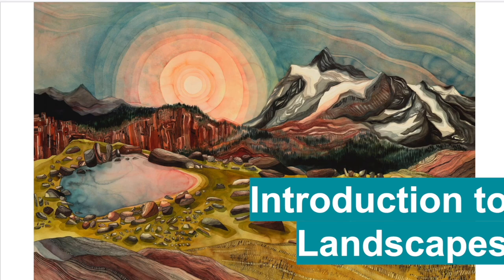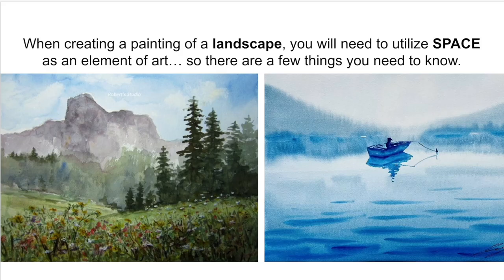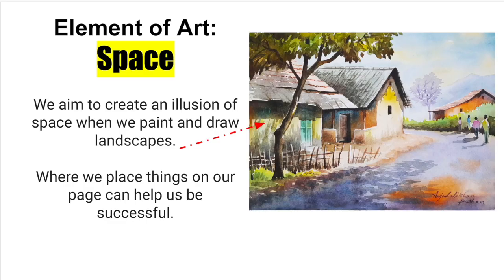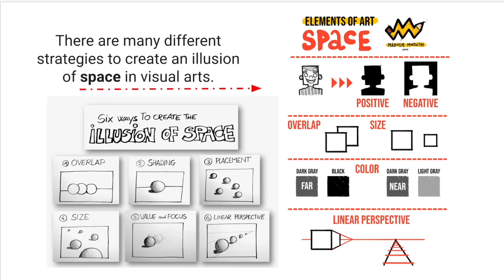This video is the introduction to landscapes. When creating a painting of a landscape, you'll need to utilize space as an element of art. We aim to create an illusion of space when we paint and draw landscapes. Where we place things on our page can help us be successful. There are many different strategies to create an illusion of space in visual arts, so you'll have a lot of different choices in how to do this.